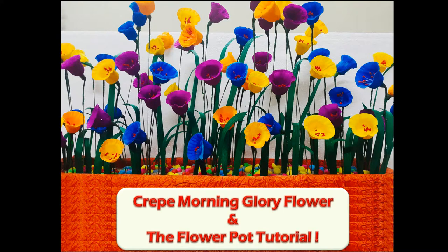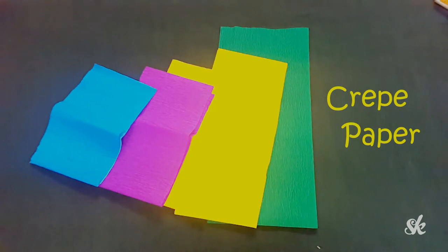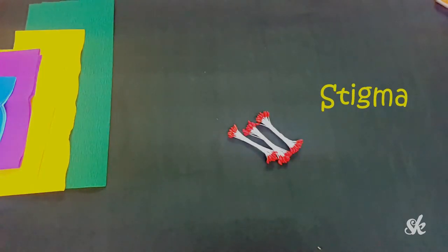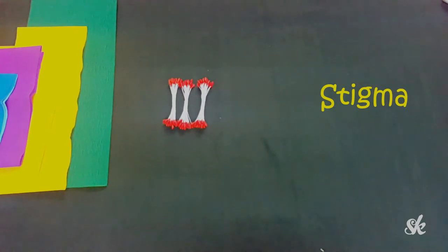Today let us learn to shape our crepe paper into morning glories and also we will learn to make a rectangular flower pot. Tools required for our flower: colorful crepe papers, stigma, thread, metal wire, scissors, green tape, glue, cutter, and pliers.